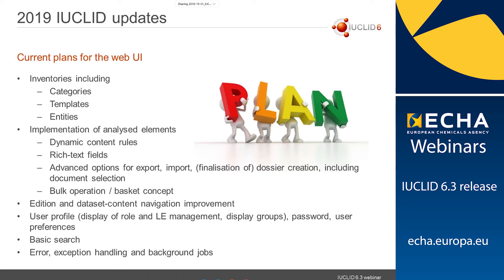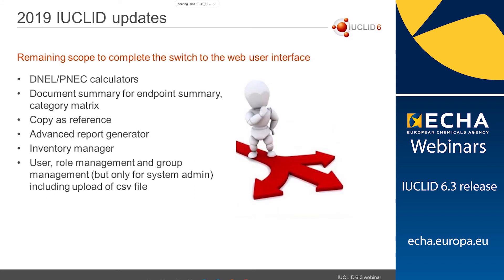We also want to improve error and exception handling in the web interface, as currently you get a basic error message without a very descriptive explanation of what happened. Some other items we're not entirely sure will make it for October next year include: the DNEL and PNET calculators, a co-registrants reference feature, the advanced report generator where you can upload your own report templates, the inventory manager tool for cleaning up inventory entities, and the full user role management profile in Euclid.